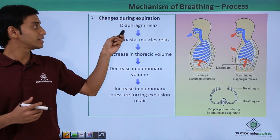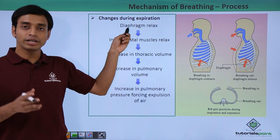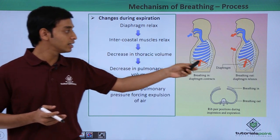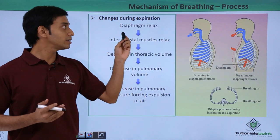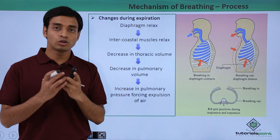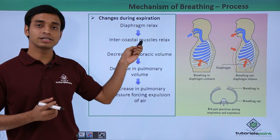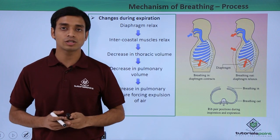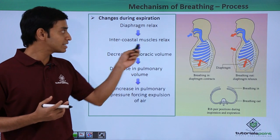During expiration, the diaphragm relaxes and returns to its normal dome shape. During inspiration, muscular contraction had changed the dome shape of the diaphragm to a flattened shape. Now the intercostal muscles start relaxing as well, and because of this relaxation, the ribs move back inside.